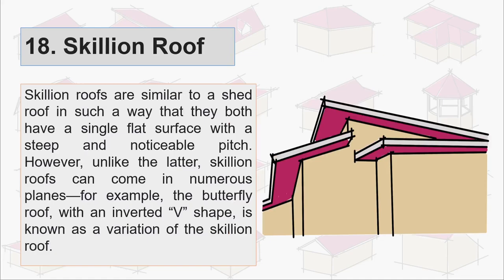Eighteenth is skillion roof. Skillion roofs are similar to a shed roof in such a way that they both have a single flat surface with a steep and noticeable pitch. However, unlike the latter, skillion roofs can come in numerous planes. For example, the butterfly roof with an inverted V shape is known as a variation of the skillion roof.